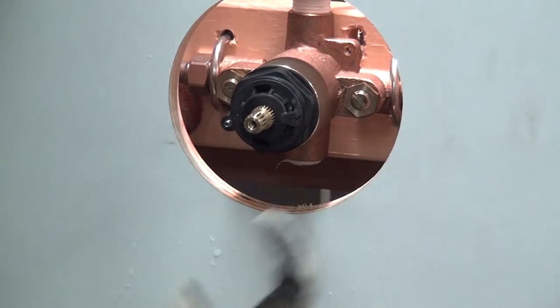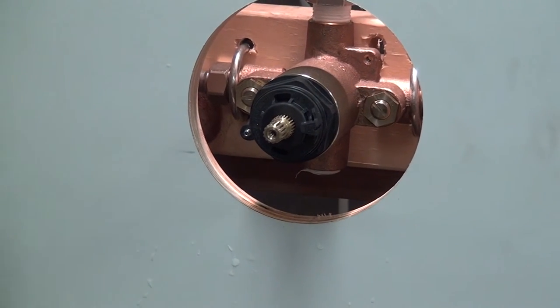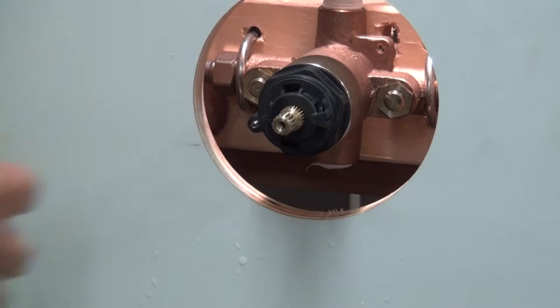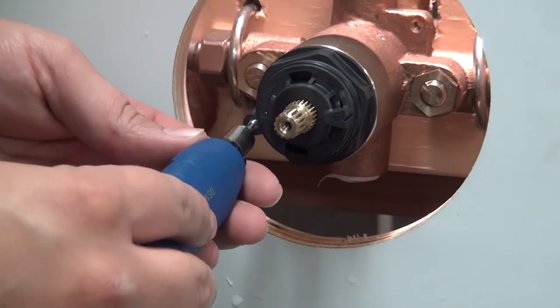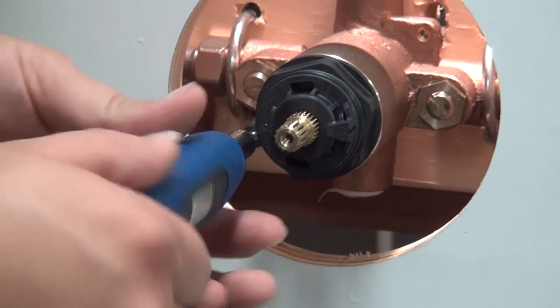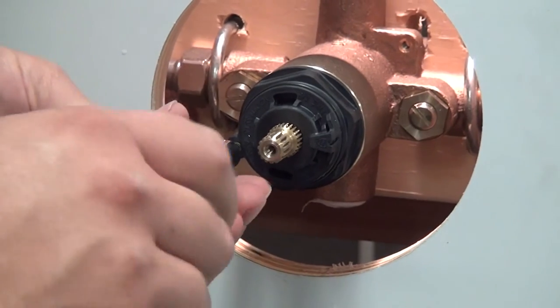Once the bonnet cap is secured to the valve body, we want to tighten down the set screw located on the side of the bonnet cap. This set screw secures to the valve body, ensuring that the bonnet cap doesn't rotate after installation.